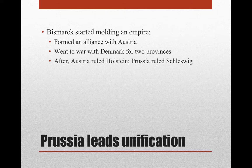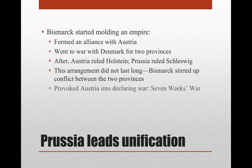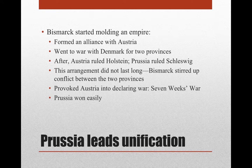Prussia and Austria decided to go to war with Denmark for two provinces in northern Germany, south of Denmark. After they won, Austria got one of the provinces called Holstein and Prussia ruled Schleswig. This arrangement didn't last very long because Bismarck stirred up conflict between the two provinces, which meant the Prussians would have to step in and try to take control. This provoked Austria into declaring war on Prussia — called the Seven Weeks War because it lasted seven weeks — and Prussia was able to win easily.